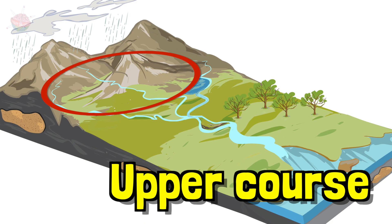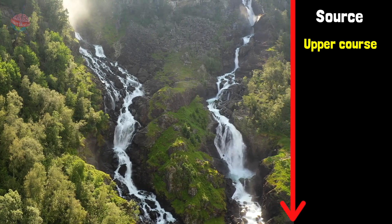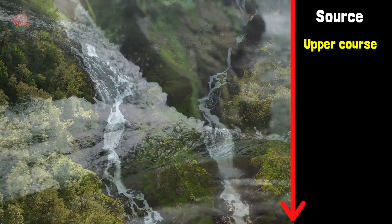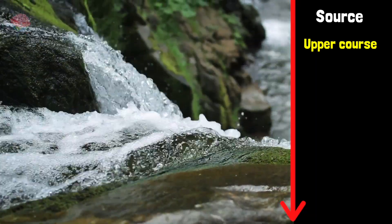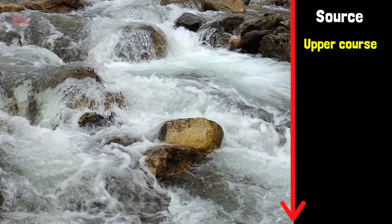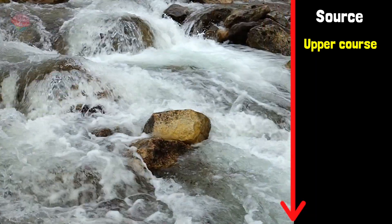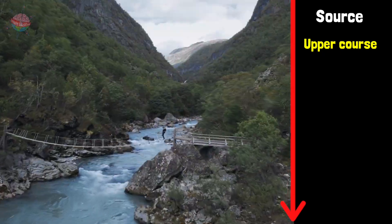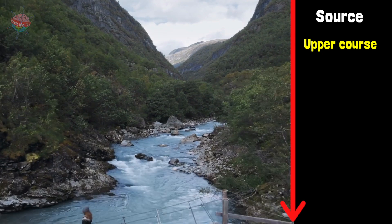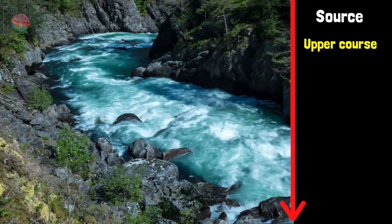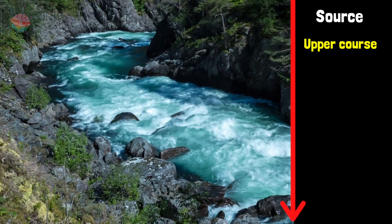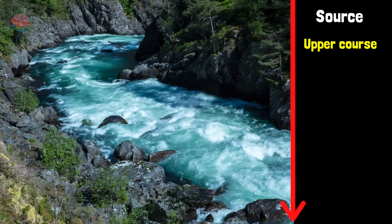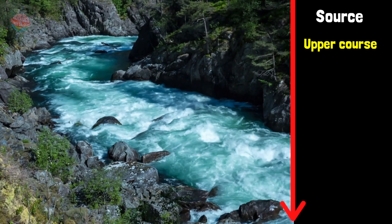Upper course: this first part of a river's journey is called the upper course. As water rushes downhill, it flows over rocks and boulders, dragging them along with it down the steep slope. Over many years, water carves paths into the rock beneath it, creating streams and rivers. If the rock is soft, it can wear away so much that huge valleys and canyons are formed.